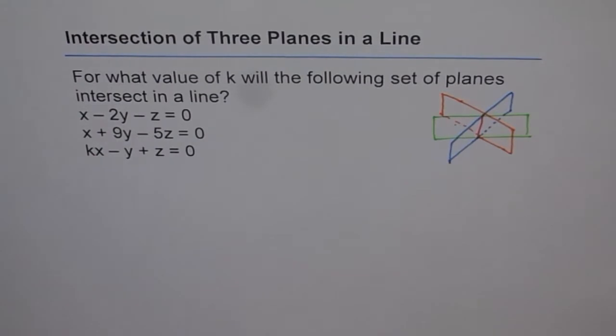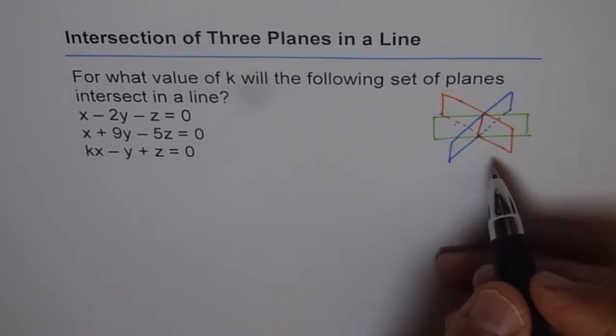So this is the scenario. For what value of k will this happen? And that is the question for us. Now, for this to happen, that means all the 3 scalar triple products should be 0. That is what we learned.